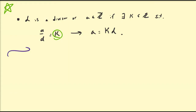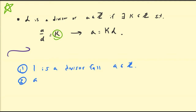I want to first start off by listing some of the basic properties of divisors, and you can prove these as an exercise. The first basic property of divisors is that 1 is a divisor for all integers a. Also, a is a divisor of a for all a in the integers, but we have to make the exception that a is not equal to 0.